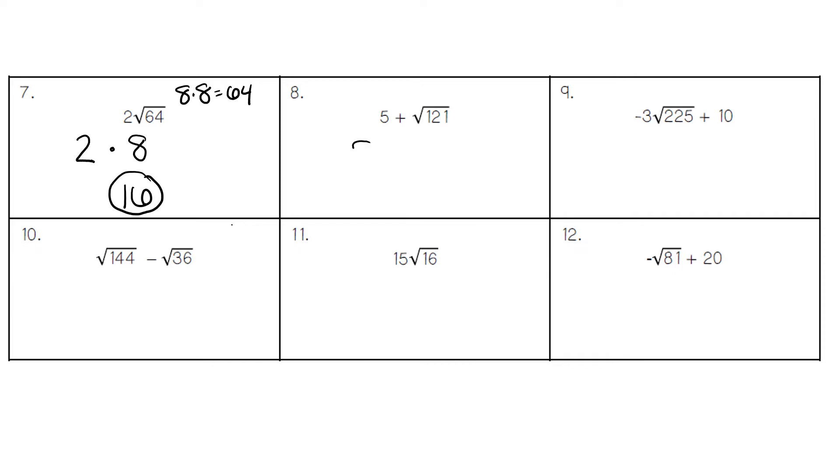In number eight, we still have the five out front, so five plus. The square root of 121 is 11, because 11 times 11 is 121. Five plus 11 gives us 16 for our final answer.